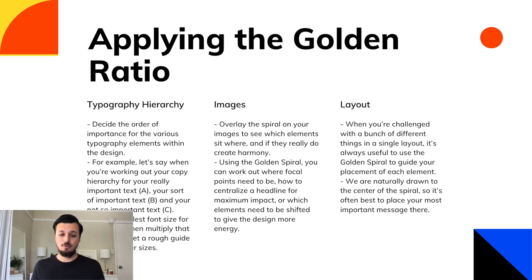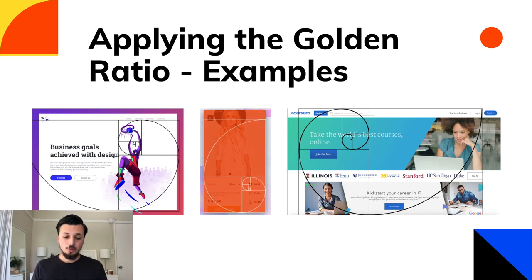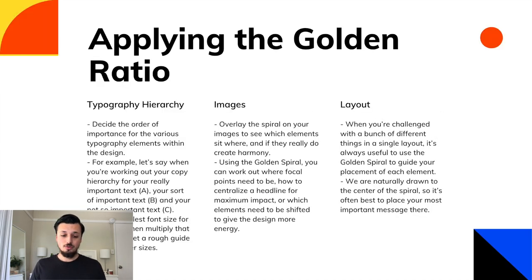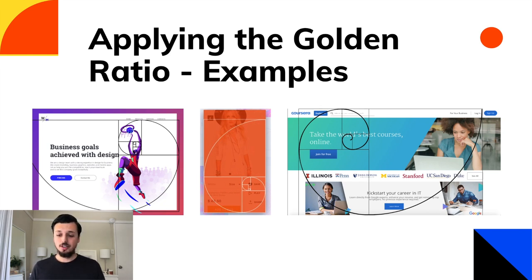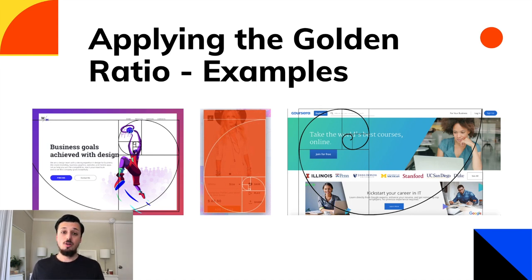Here are some examples of the golden ratio in action. The spiral doesn't have to be in the exact same format — you can flip it vertically or horizontally to fit the design. It also works for mobile designs. As a final example, Coursera centered their text and the 'Join for Free' button in the spiral, so people are looking at the most important information when they arrive at the site — that's where our eyes naturally go.